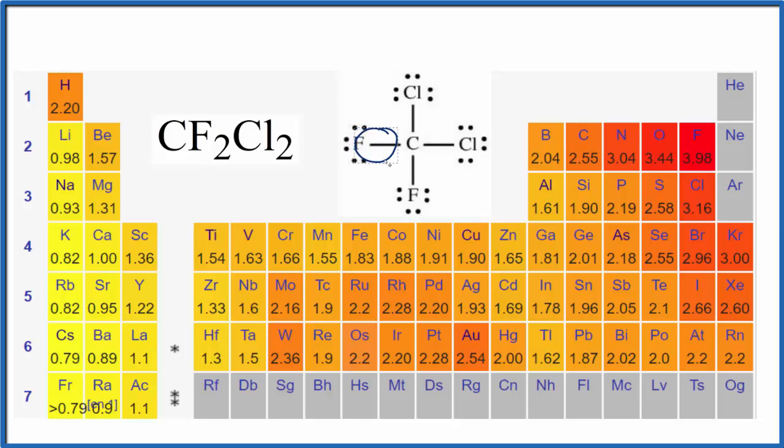Let's look at the carbon and chlorine bond. When we're looking at this pair of electrons, carbon is 2.55 and chlorine is 3.16. That's still a big enough difference for this to be a polar bond. Not quite as big as the difference between carbon and fluorine, but this is still a polar bond.